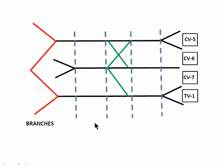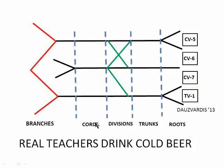And here they are all spread out. Roots, trunks, divisions, cords, and branches. Branches are the small terminal parts of the brachial plexus. They're the named nerves that come off of the brachial plexus. And we're going to look at all those in a minute. There's about 16 of those. So it's roots, trunks, divisions, cords, and branches.